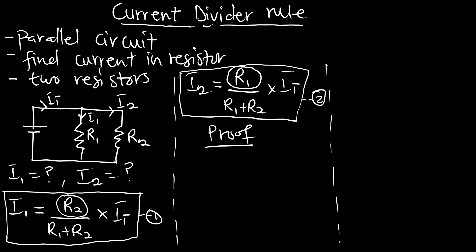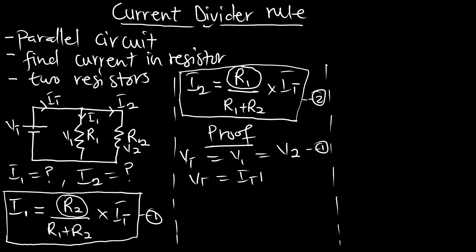Now for parallel circuits, let's call V1 as the voltage across resistor one and V2 the voltage across resistor two. We know that Vt is equal to V1 and that is equal to V2 - that is established. From Ohm's law we know that our Vt is also equal to the total current multiplying the total resistance.